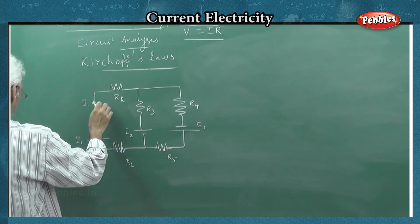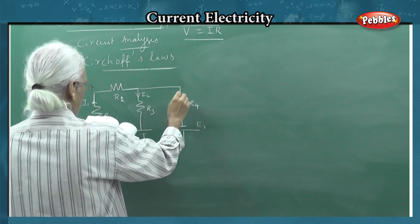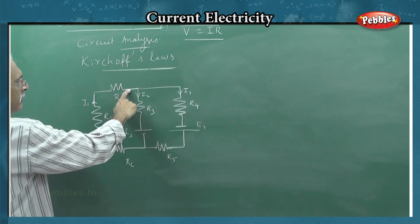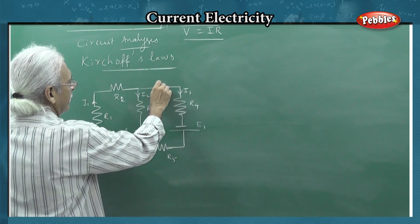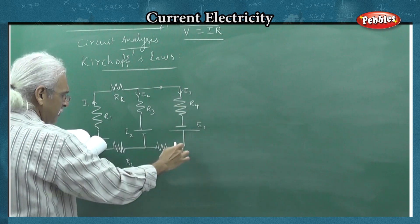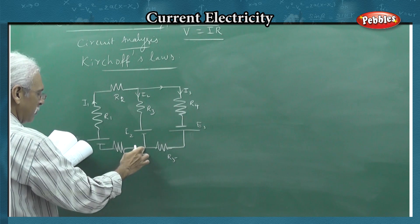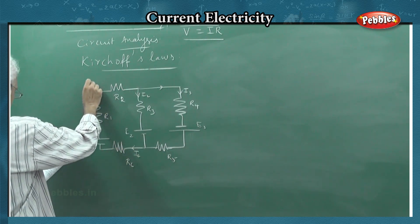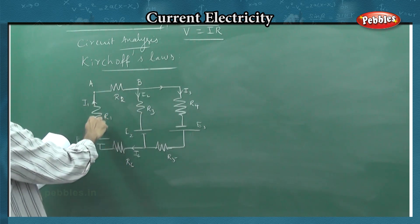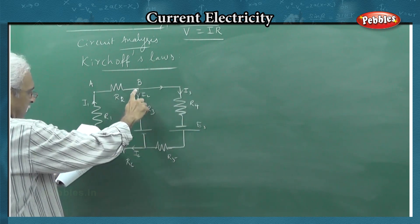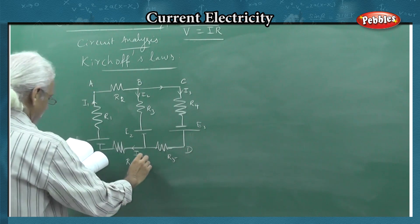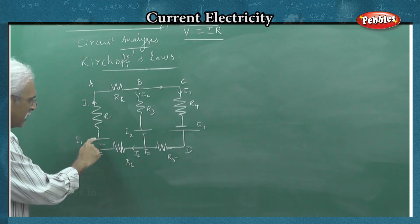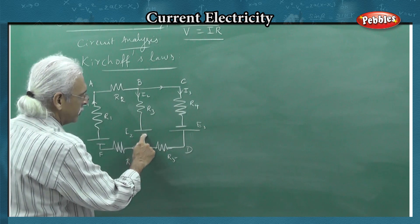So let me draw. I1 is the current flow. Here is the branch of I2, here is the branch of I3, and I4. There are junctions: A junction, B junction — junction of two resistors — junction of three resistors, junction D, junction E, junction F. There are three sources of EMF: E1, E2, E3 — long line positive, short line negative.